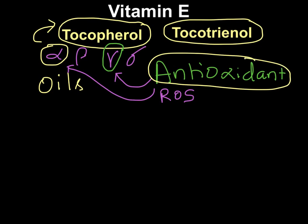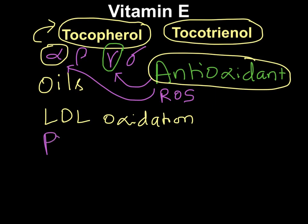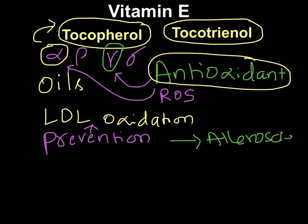Another role of vitamin E is prevention of LDL oxidation. By preventing LDL oxidation, vitamin E prevents the atherosclerosis process. Atherosclerosis can lead to atheroma formation, which can break open, causing emboli and thrombosis. These emboli can obstruct coronary vessels causing myocardial infarction, or obstruct cerebral vasculature causing stroke.